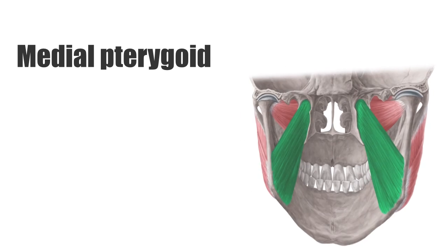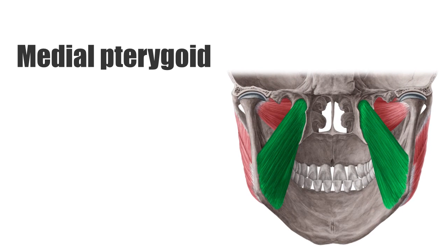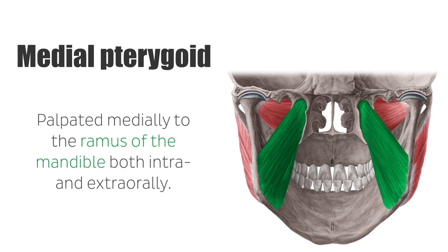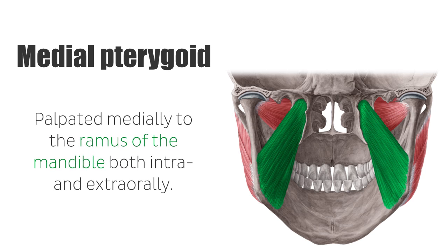Along with the masseter, this muscle forms a sling around the mandible. The medial pterygoid can be palpated medially to the ramus of the mandible both intra- and extra-orally.